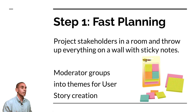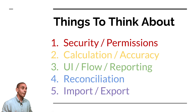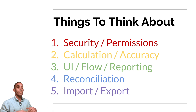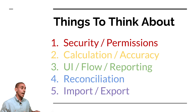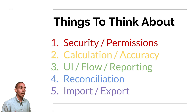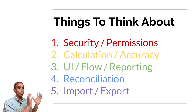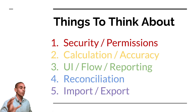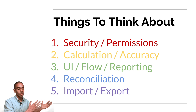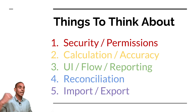When doing this fast planning process, there are a couple of key things to think about. You want to consider data security and permissions as well as application security and permissions. If you've got calculations or machine learning models involved, you want to work out what those calculations are beforehand and whether you've got any benchmarks or thresholds for accuracy. You also want to look at your UI and flow, any reporting you might need, reconciliation — making sure data from different sources reconciles from your base to your application — and finally, importing and exporting data.